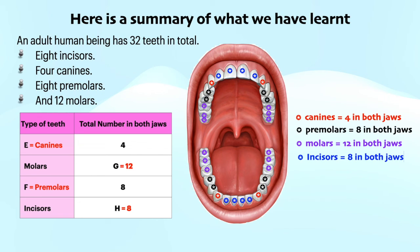A total of 8 premolars — 4 are on the upper jaw and 4 are on the lower jaw. A total of 12 molars — 6 are on the upper jaw and 6 are on the lower jaw.